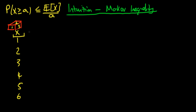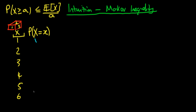Associated with each of those values of X there is a corresponding probability — the probability that the random variable takes on that specific value. For the case of a fair die each of these probabilities will be 1/6. But I'm not going to assume that our die is necessarily a fair die. The only thing I am going to assume is that the expectation of the value which our die shows is 3.5.